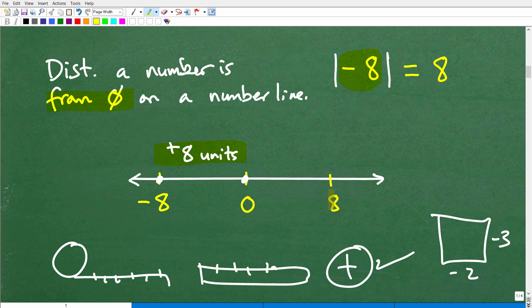So negative 8 is 8 units away, 8 positive units away from 0. Great. How far is 8 away from 0? Well, it's also 8 units away. It's the same distance. In other words, if I take my tape measure and I go from there to negative 8, it's the same as going from 0 to 8. That's why the absolute value or the distance away from negative 8 from 0 is 8, and the distance from a positive 8 from 0 is also 8 units away.